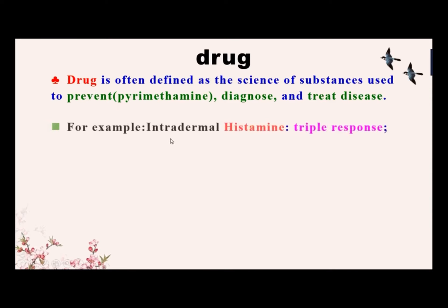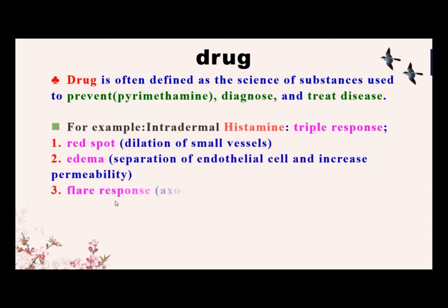To diagnose — for example, intradermal histamine could induce a triple response. It includes a red response, edema, and flare response. Because histamine could dilate vessels, the red response is a result of dilation of small vessels. Edema is a result of the separation of endothelial cells and increased permeability.